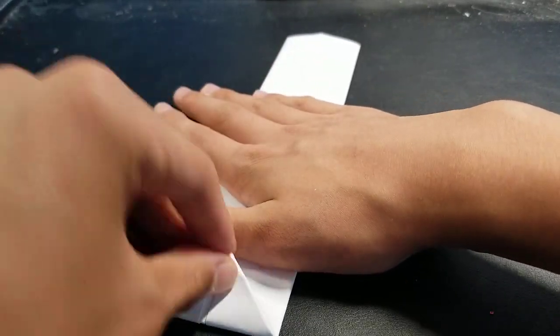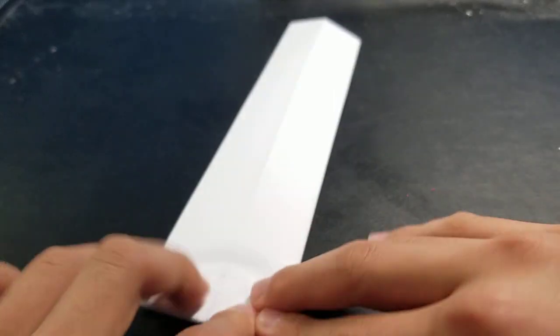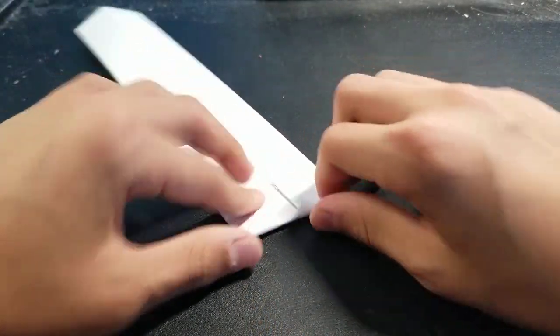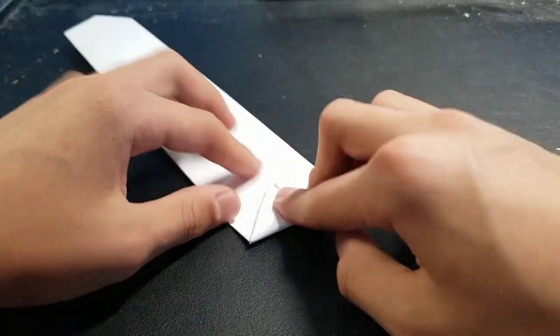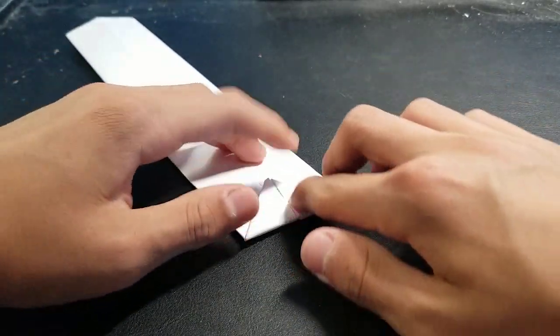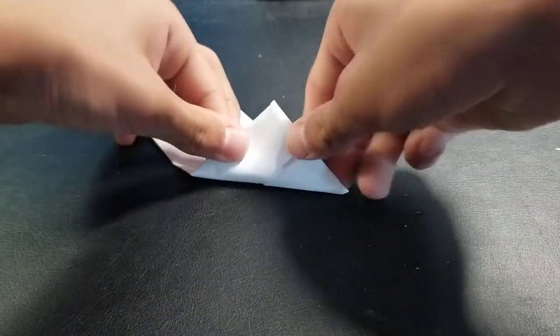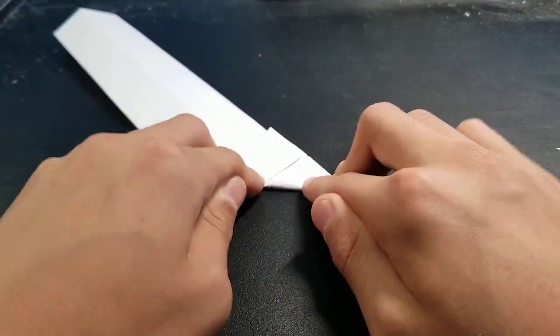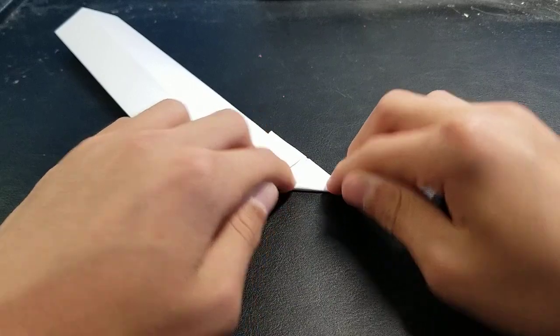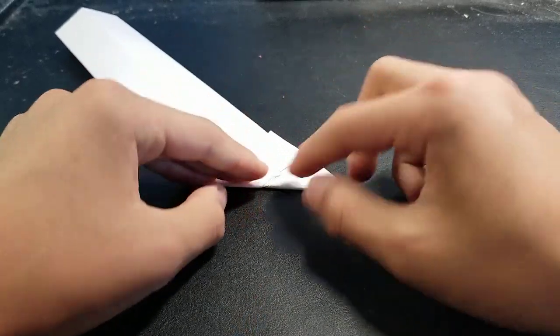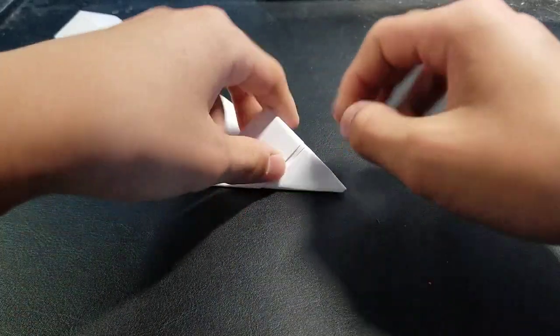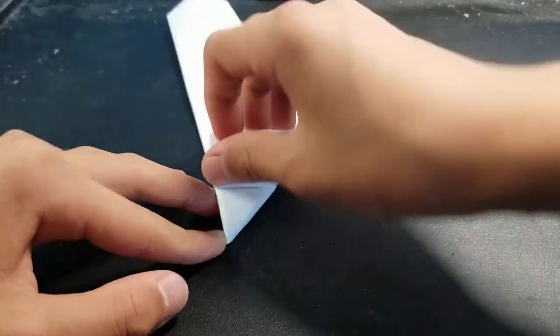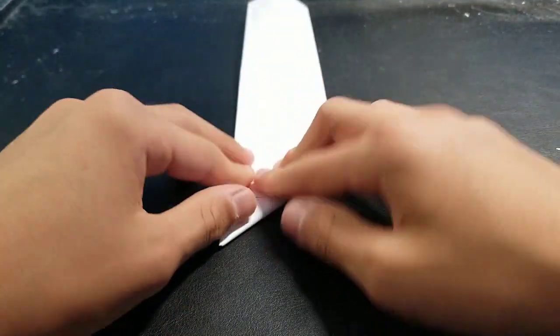First smooth everything out and then just like how you did this, roll it over except on this side. And crease. Unfold it and do the same thing with the other airplane fold side.